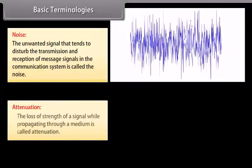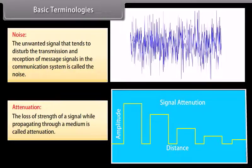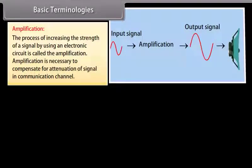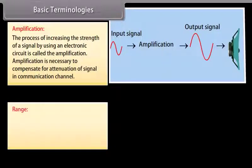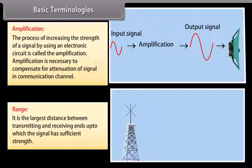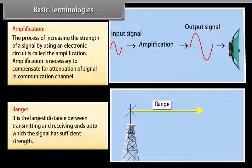Attenuation: the loss of strength of a signal while propagating through a medium is called attenuation. Amplification: the process of increasing the strength of a signal by using an electronic circuit is called amplification. Amplification is necessary to compensate for attenuation of the signal in the communication channel. Range: it is the largest distance between transmitting and receiving ends up to which the signal has sufficient strength.